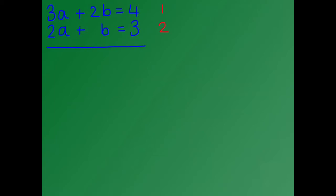In our question I want to make the b's the same. In equation number 1 we've got 2b, and in equation number 2 I have 1b. So what do I multiply 1b by to get 2b? The answer, of course, is 2. So I'm going to rewrite equation number 1 exactly the same because we're not multiplying this equation by anything. So we've got 3a plus 2b equals 4.